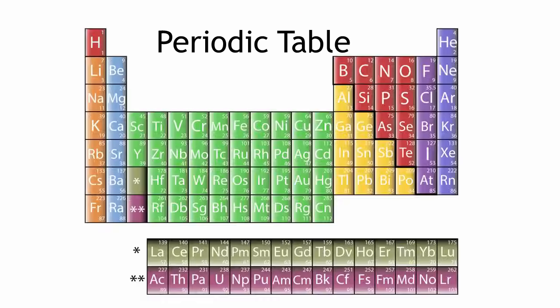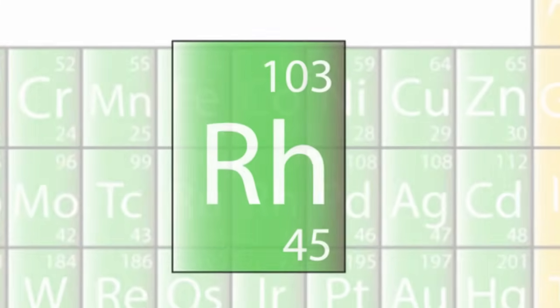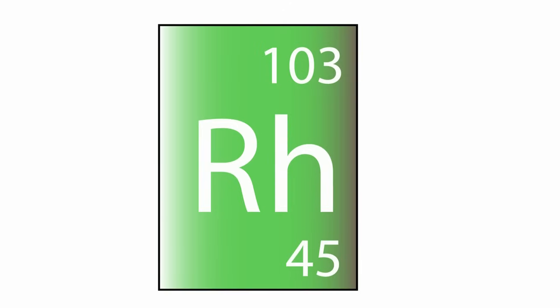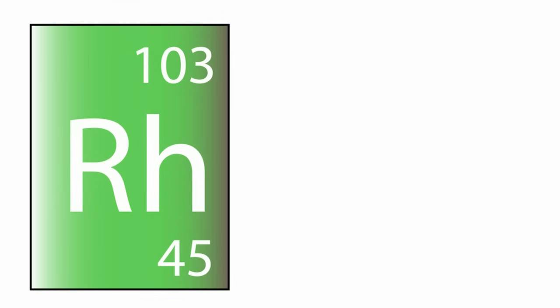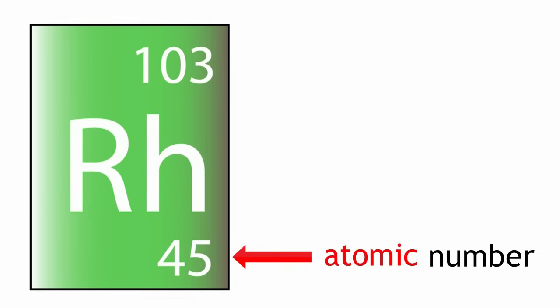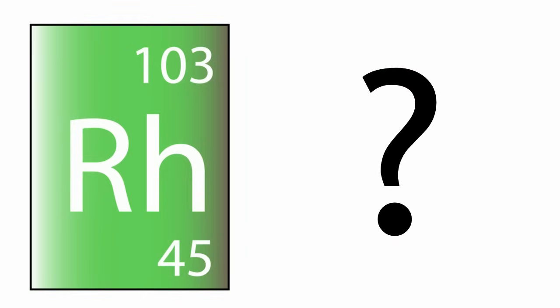When you look at the periodic table, you'll see that each element has its own box, and within that box you'll find two numbers: the atomic number, or proton number, and the mass number. But what do these numbers mean?